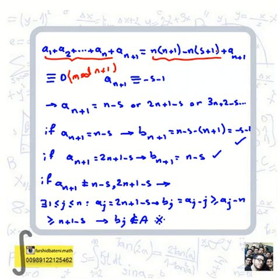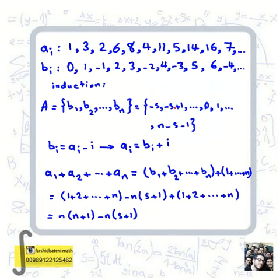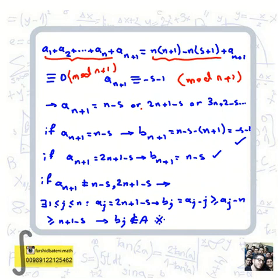Since a_{n+1} is a positive integer, its value congruent to -s-1 mod (n+1) must be n-s or 2n+1-s (or higher terms in the arithmetic progression). We know s < n because in our example we always have zero and positive numbers among the bi, so n-s is a positive integer. Thus a_{n+1} equals either n-s or 2n+1-s.